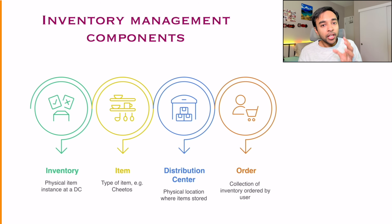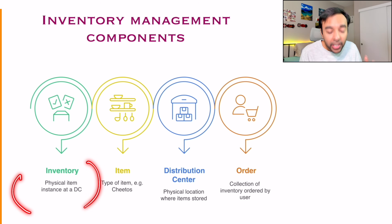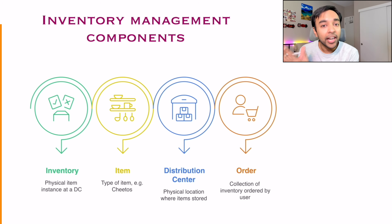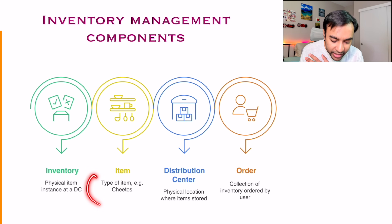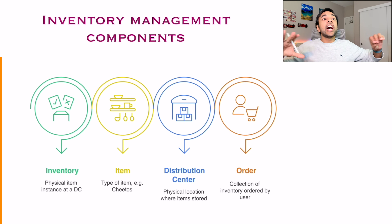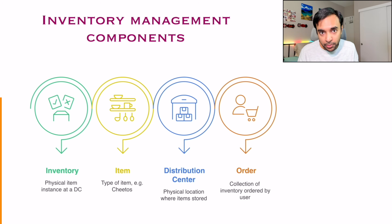Talking about products, you should be aware of some of the common terms we will be using throughout our design. First of all, you have inventory. Inventory simply means the count of an individual item that is available at your data center. For example, a bag of Cheetos is an item, and inventory means that you have 1,000 packets of Cheetos. These two terms are often confused and used interchangeably.